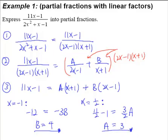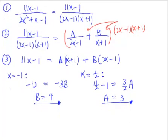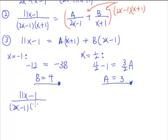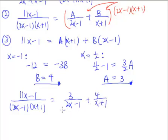Now that we know A equals 3 and B equals 4, we can write the final answer. Our original single fraction can be expressed as the sum of partial fractions: 3 over (2x minus 1) plus 4 over (x plus 1). We have essentially done the reverse — combining these partial fractions gives back the original single fraction.